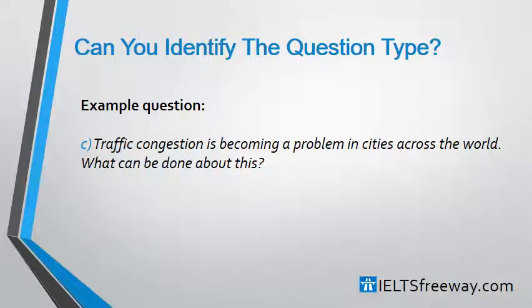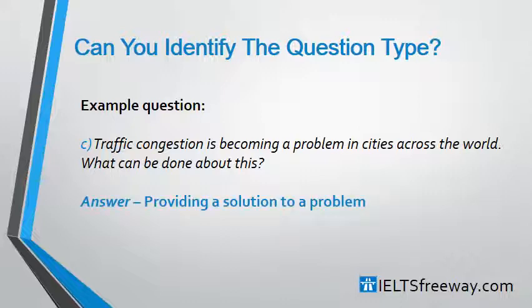Question number three: 'Traffic congestion is becoming a problem in cities across the world. What can be done about this?' Pause the video if you need to and have a quick think. And the answer is, of course, providing a solution to a problem. Clearly at the end it says 'what can be done about this?' — that's a clear hint for you.